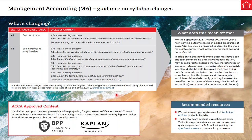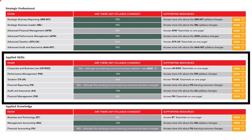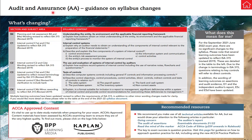Those are the changes being made in the Management Accounting subject. Now let us see what changes are being made in Financial Management, Financial Reporting and Corporate and Business Law exams. The only changes are being made in the Audit and Assurance exam and Performance Management exam. As you can see on the screen, there is a summary of syllabus changes that are being made in the Audit and Assurance exam.